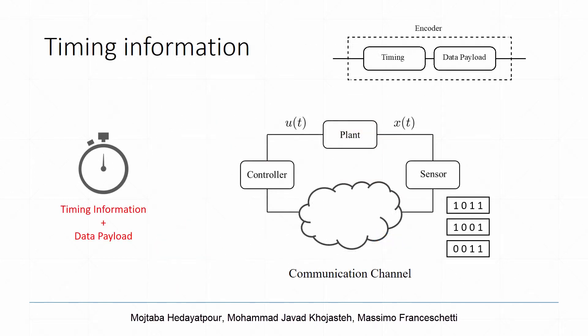In language, the pauses or timing between words in a sentence contains semantic information, and the meaning of the sentence is partially encoded in this timing. In the same way, it is also possible to transmit information in communication systems not only by message contents or data payload, but also with its timing. Our goal is to use this concept of timing information in network control systems to encode and transmit information about the state of the system.